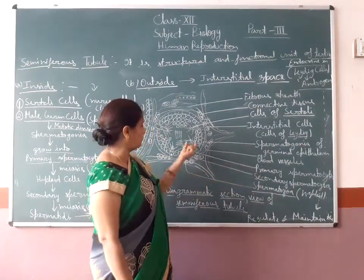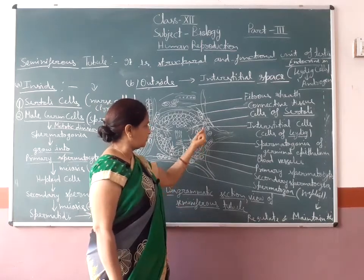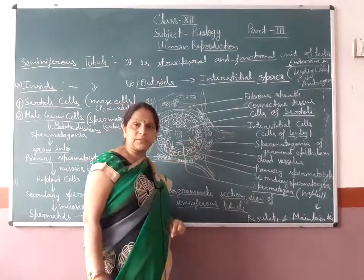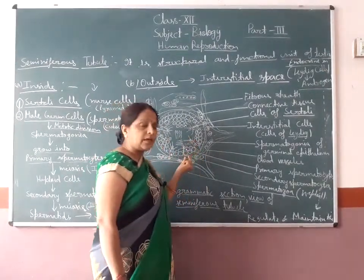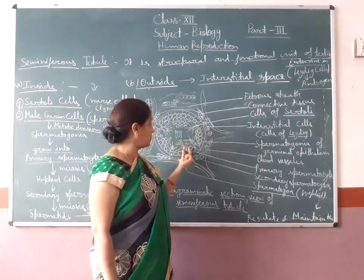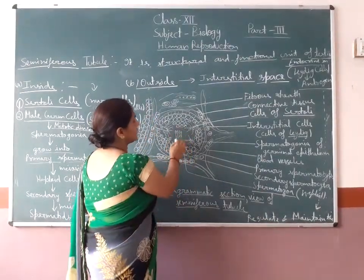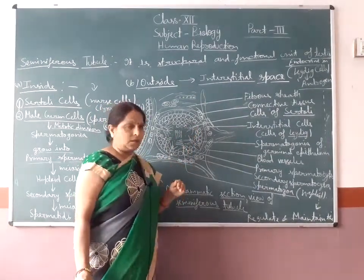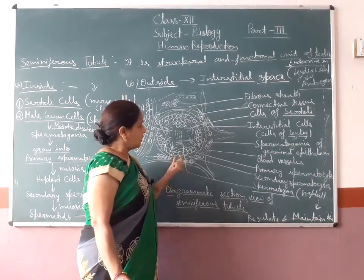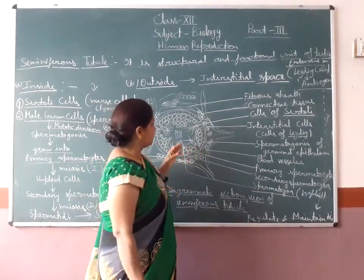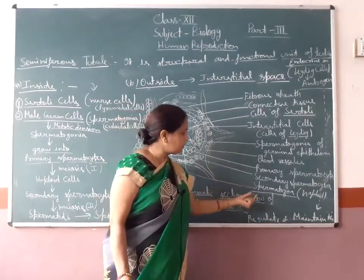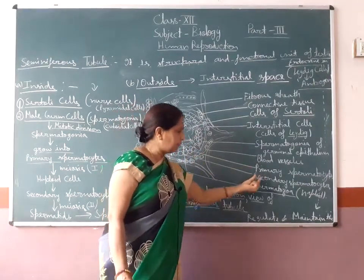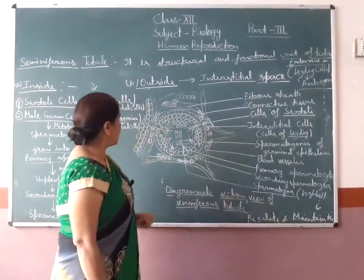So here all of you are watching: spermatogonia, then primary spermatocytes, then secondary spermatocytes, then secondary spermatocytes develop into spermatids, then spermatids develop into spermatozoa which are seen in this field. So here you can see the formation of the spermatocytes and the construction of the seminiferous tubules.